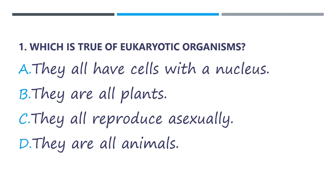Number 1. Which is true of eukaryotic organisms? A. They all have cells with a nucleus. B. They are all plants. C. They all reproduce asexually. And letter D. They are all animals.